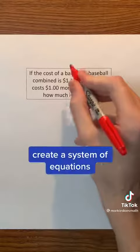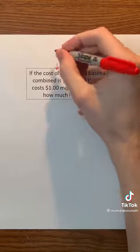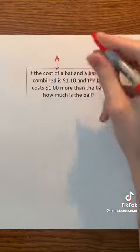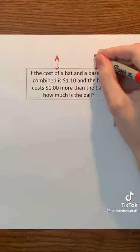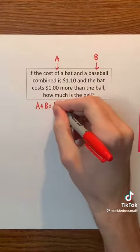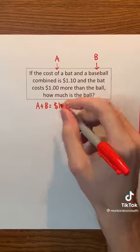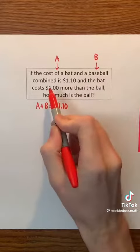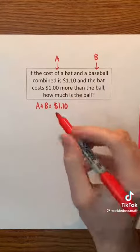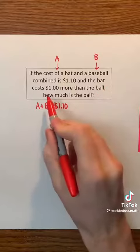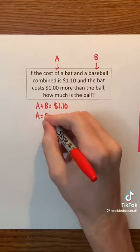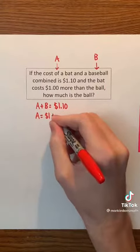First, we can create a system of equations where the cost of the bat is represented by A and the cost of the baseball is represented by B. This means that A plus B equals $1.10, since the cost of a bat and a baseball combined is $1.10. Also, we're told that the bat costs $1 more than the ball, so A must equal $1 plus B.